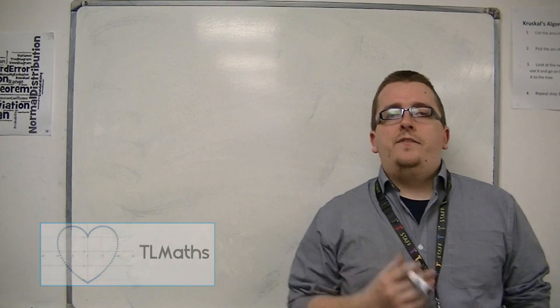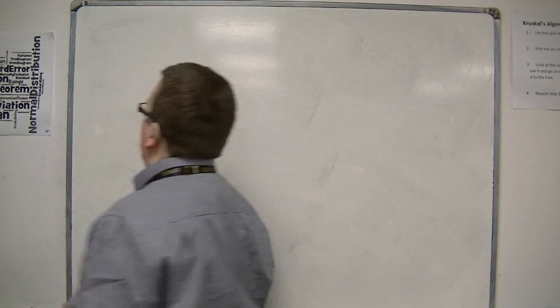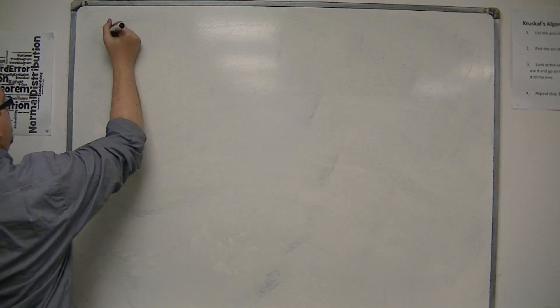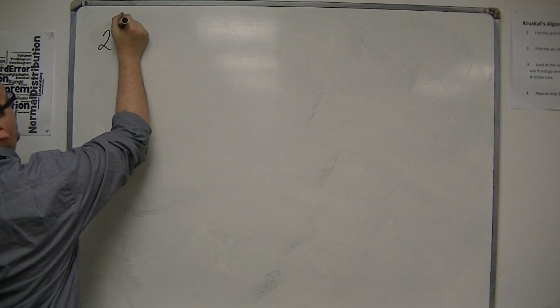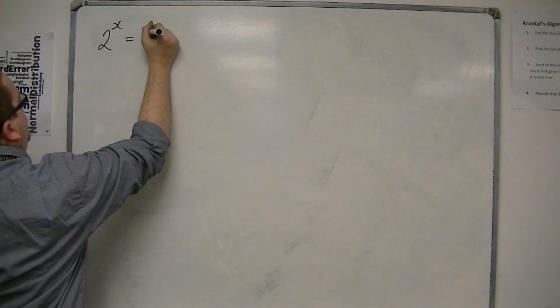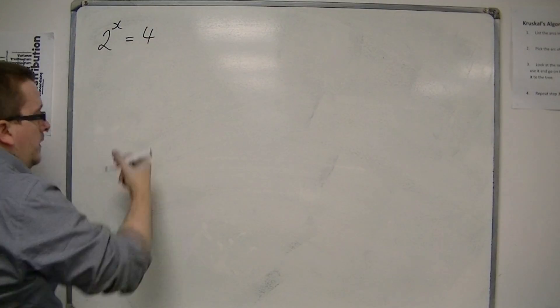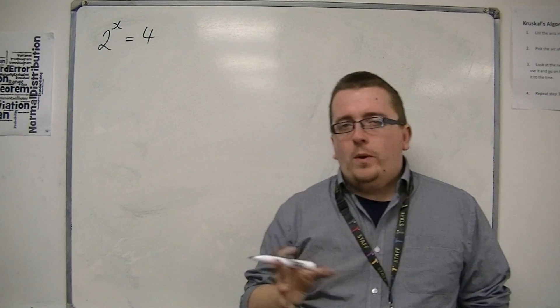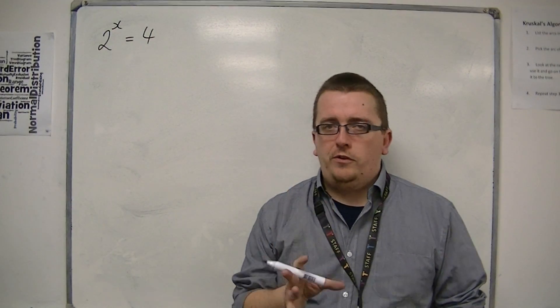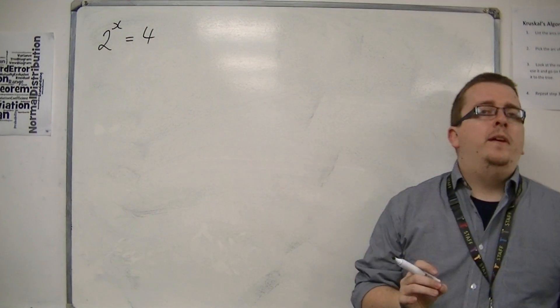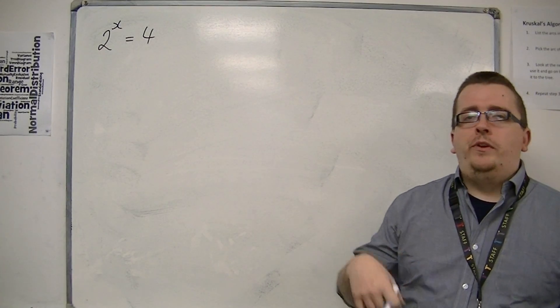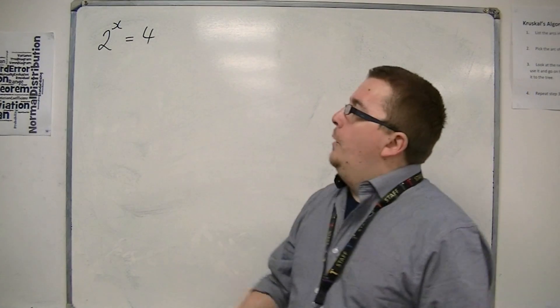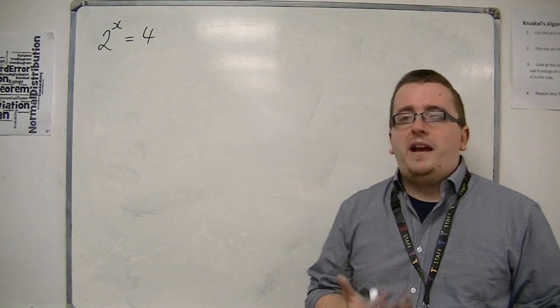Now let's say we have an equation like this. If I had something like 2 to the x is equal to 4, then here is a problem, an equation, that we know how to solve, mainly because we can spot it. It's one of those index problems that we've looked at before, and we should be able to identify that x would have to be 2.